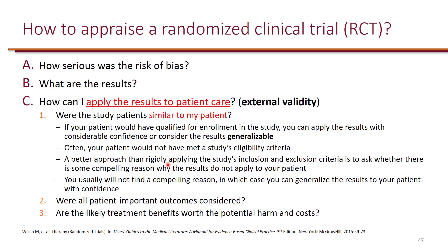Now the actual external validity of the results: external validity is essentially the generalizability of the results — how can I apply the results to patient care or to my patient? You want to see how similar the patients in the study were to your patients by examining the inclusion and exclusion criteria. You also look at the average patient characteristics: age, gender, where they came from, comorbidities, and other medications. It doesn't have to exactly match your patient, but you look for compelling indications that the results don't apply. If you cannot find such indications, you can say the study is generalizable and applies to your patient.